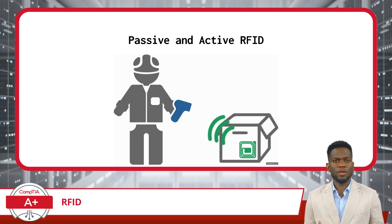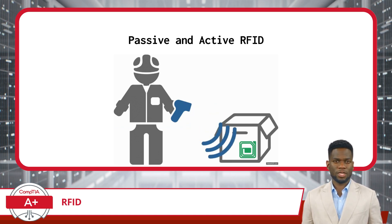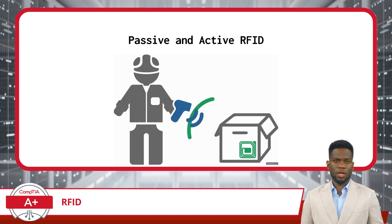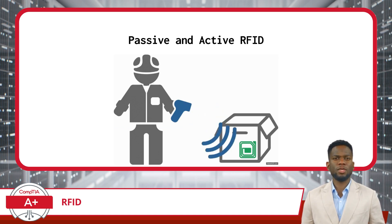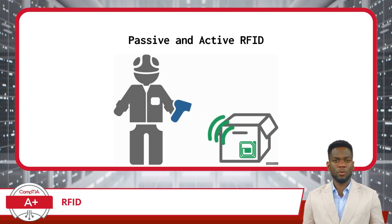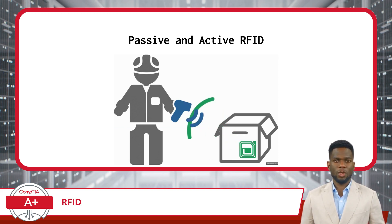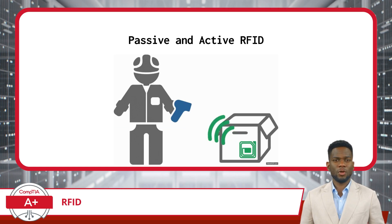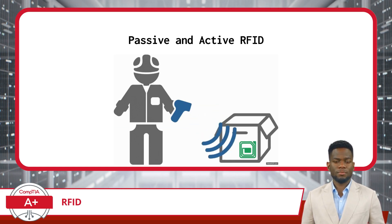Passive RFID is cost-effective and suitable for short-range applications, while Active RFID offers greater range and real-time tracking capabilities, making it ideal for scenarios like asset management or vehicle tracking.